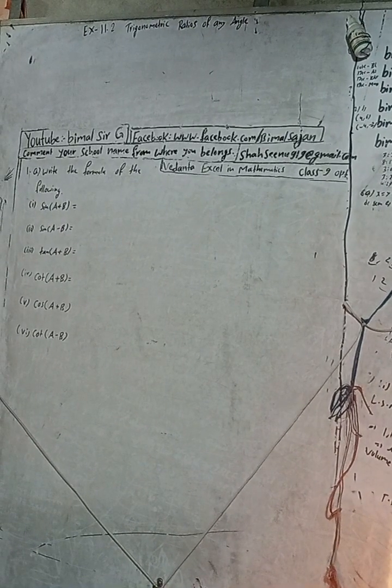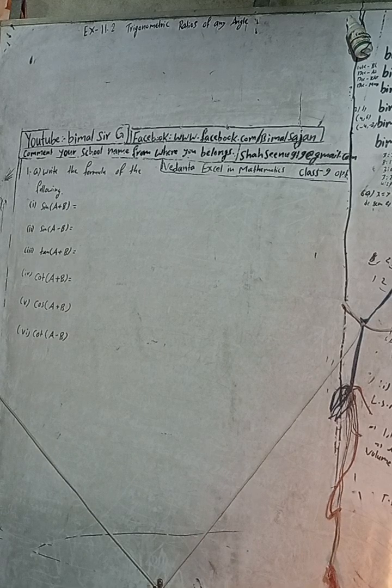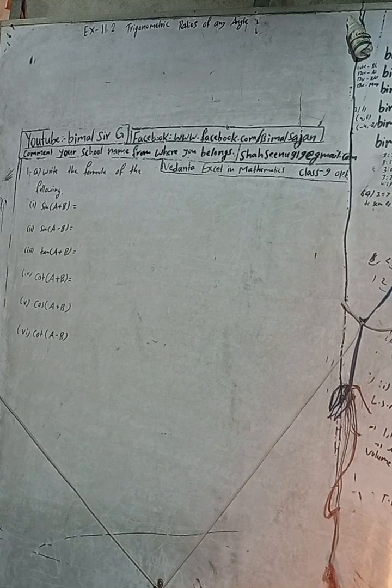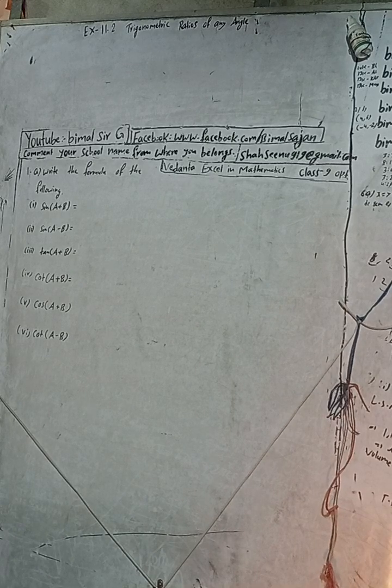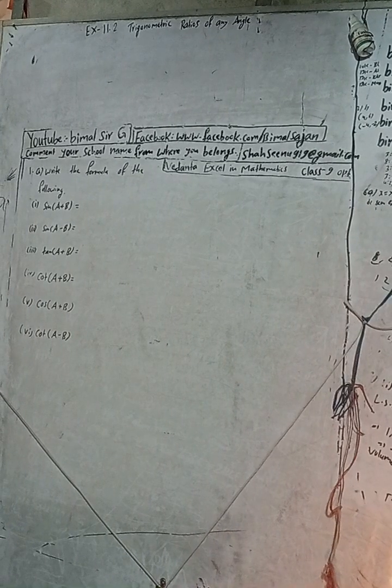Hi class 9 and 10 students, welcome back to Vimal Sarji YouTube channel. This is question number 1a, number I am going to solve in the same video. This is of exercise 11.2 Trigonometric Ratios of any angles, Vedanth Excel in Mathematics compulsory. Not this, this is optional mathematics class 9 and don't forget to check the playlist.